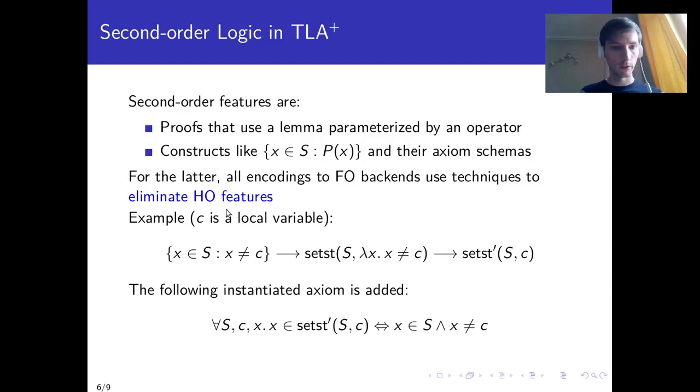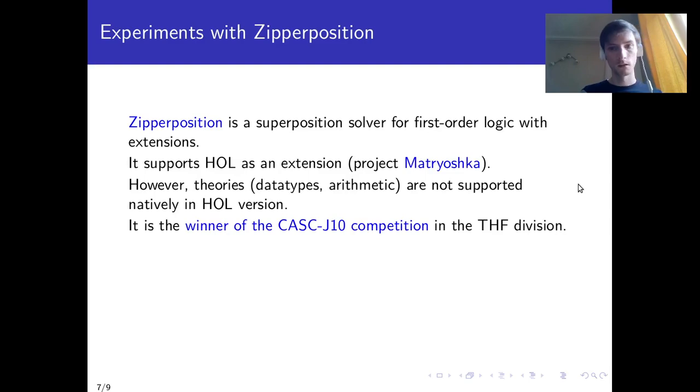There are complications when some local variables are involved. C in that example, we need to make some arrangements, provide C as a parameter, but this is something that we are able to do in cases such as this one, because we know the axiom schema behind the construct. Now, if I don't want to do this rather technical elimination procedure, I can just encode the problem into higher order logic and send the higher order problem to a solver which is able to understand higher order logic.